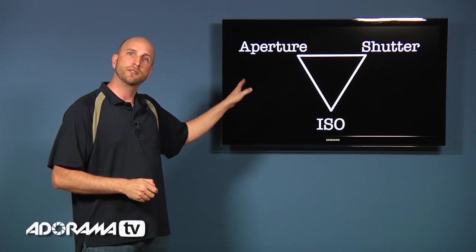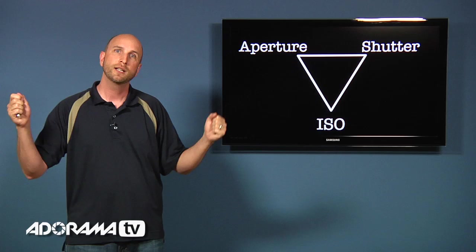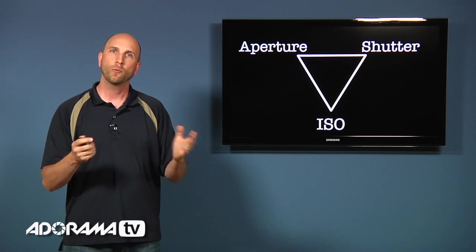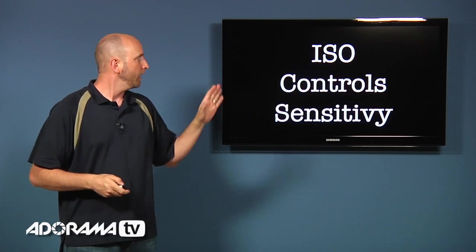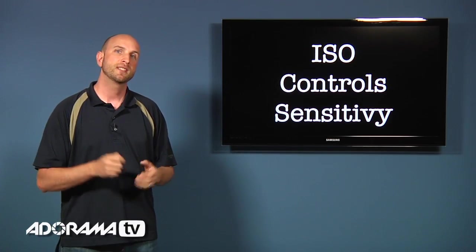So, so far we've talked about aperture and shutter. And how those two things work together to keep things in balance. Now what about ISO? How does that work? Well ISO controls our camera's sensitivity.